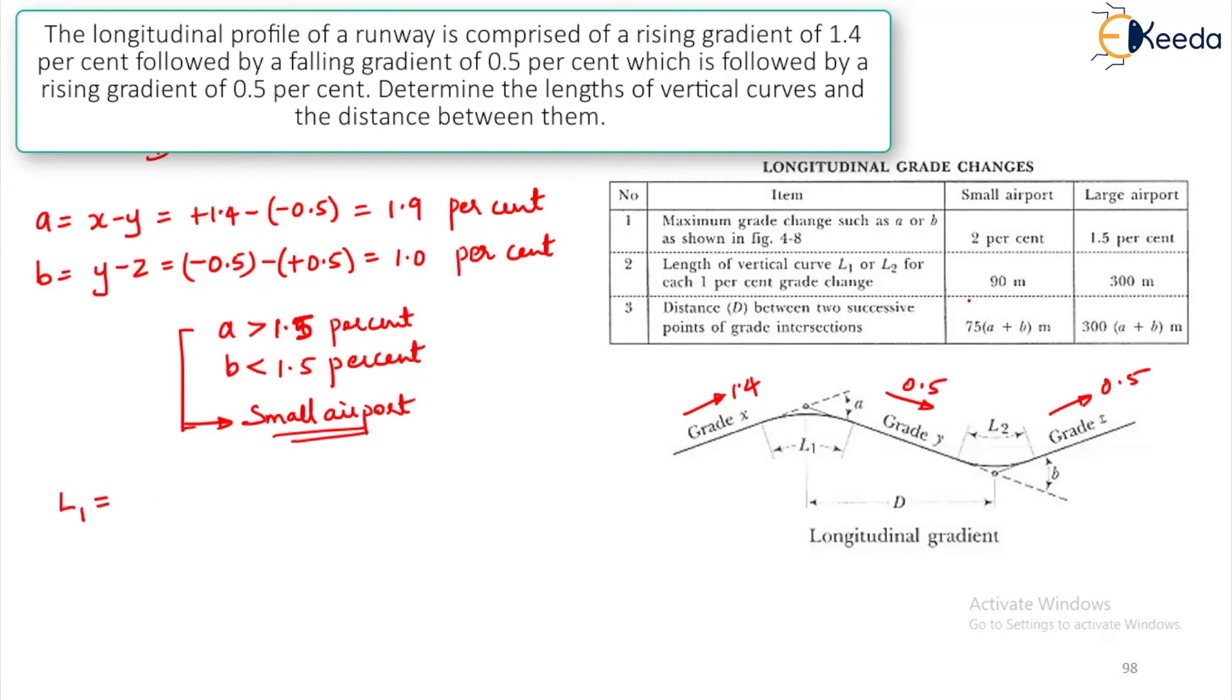Now you calculate L1. What will be L1? Per percent change gradient for small airport is 90. This will be 90 into the value of A which is 1.9. This will give you 171 meters and then L2 will be 90 into this percent value. It is 1.0, so you will get 90 meters itself. Then for D what formula will you use? 75 of A plus B. That is 75 into A is 1.9 and B is your 1.0, so this will give you a value equal to 217.50 meters.